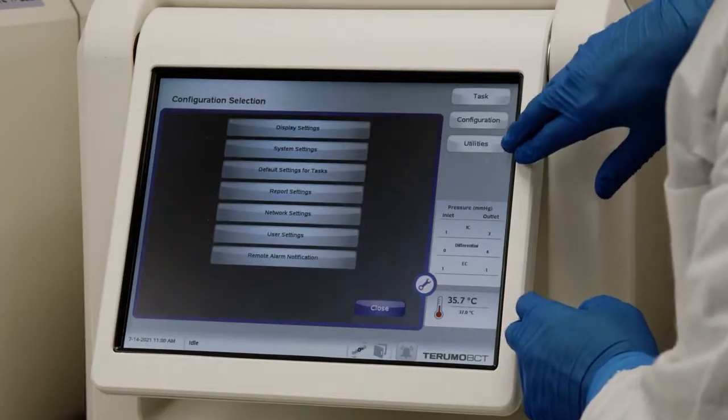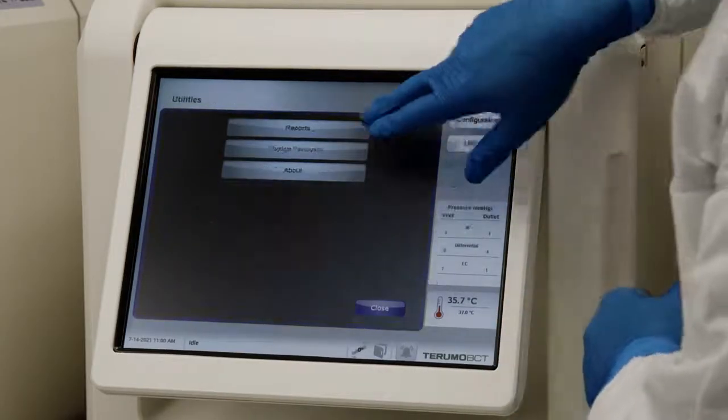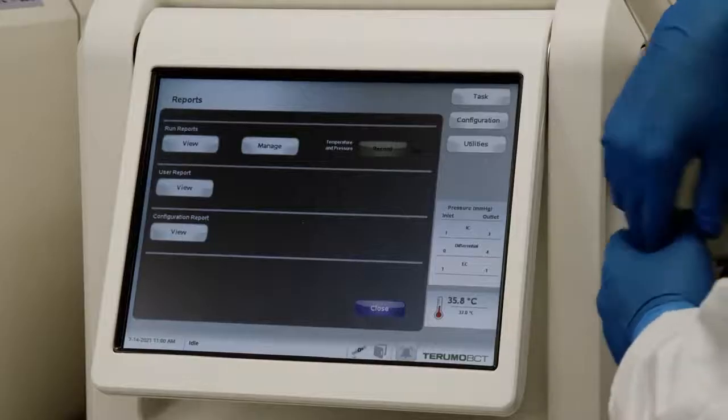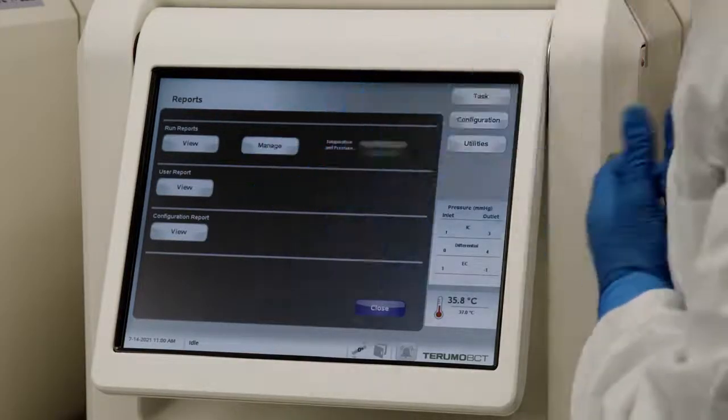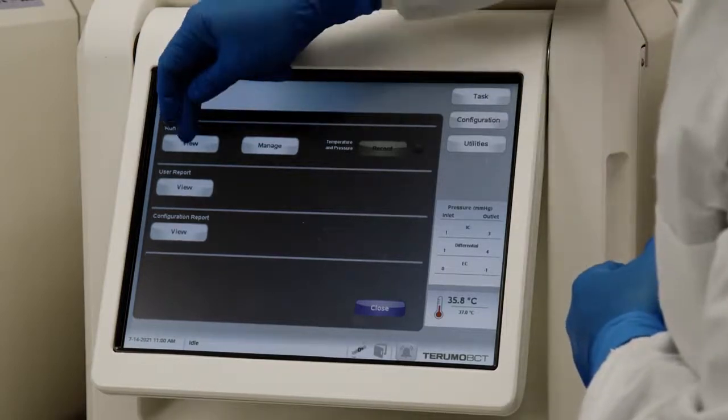Reports can be viewed in the utilities tab. And there are three different report types: there's a run report, a user report, and a configuration report. Let's view the current run report.